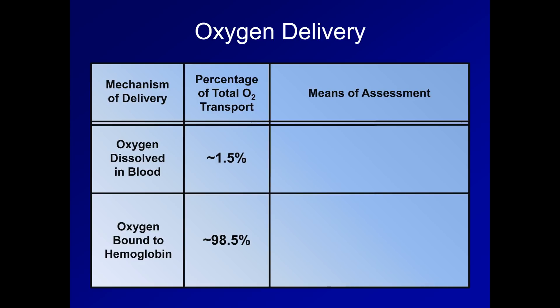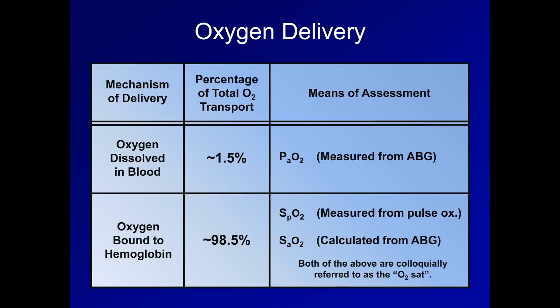The means used to assess each of these mechanisms of delivery is as follows. For the oxygen dissolved in blood, we assess that by examining the PaO2, or the partial pressure of oxygen in arterial blood, which is directly measured from the ABG. For the oxygen bound to hemoglobin, we usually assess this by examining the SpO2, which refers to the percentage of hemoglobin which is bound to oxygen as measured directly from a pulse oximeter. An alternative to the SpO2 is a frequently overlooked value called the SaO2, which refers to the percentage of hemoglobin bound to oxygen as calculated by the ABG analyzer using a rather complex algorithm. The SaO2 can also be directly measured by a device known as a cooximeter. Both SpO2 and SaO2 are colloquially referred to as the O2SAT.